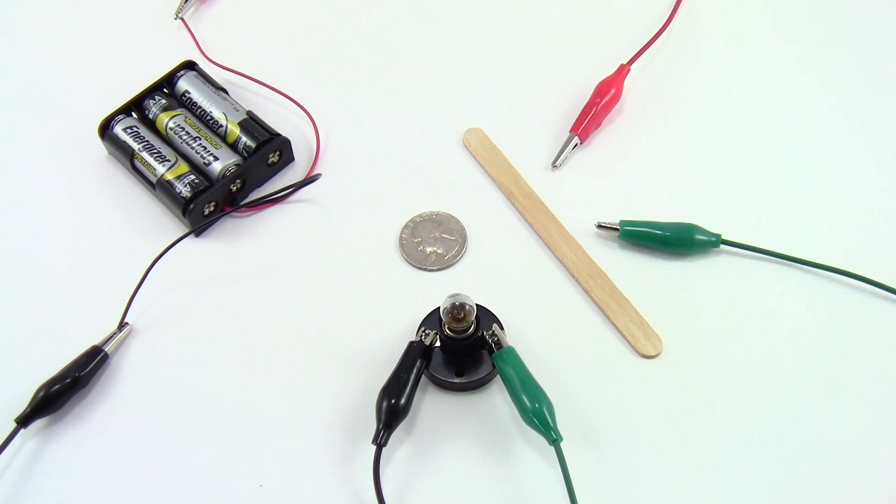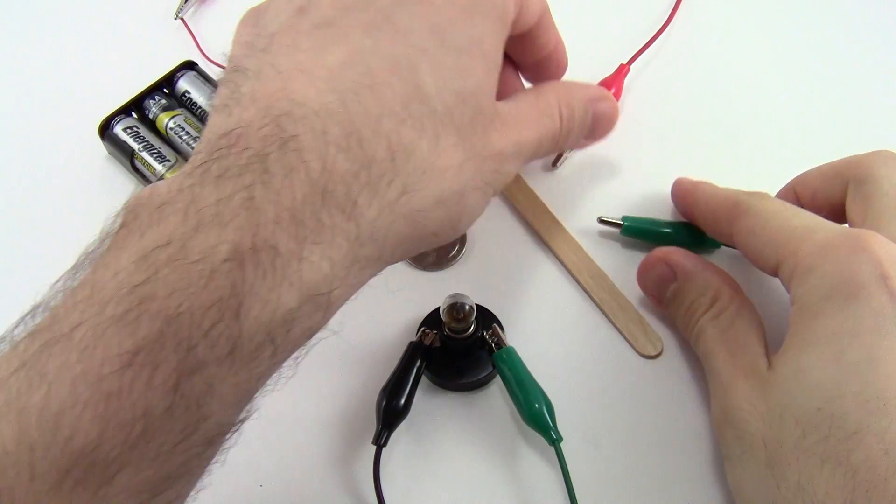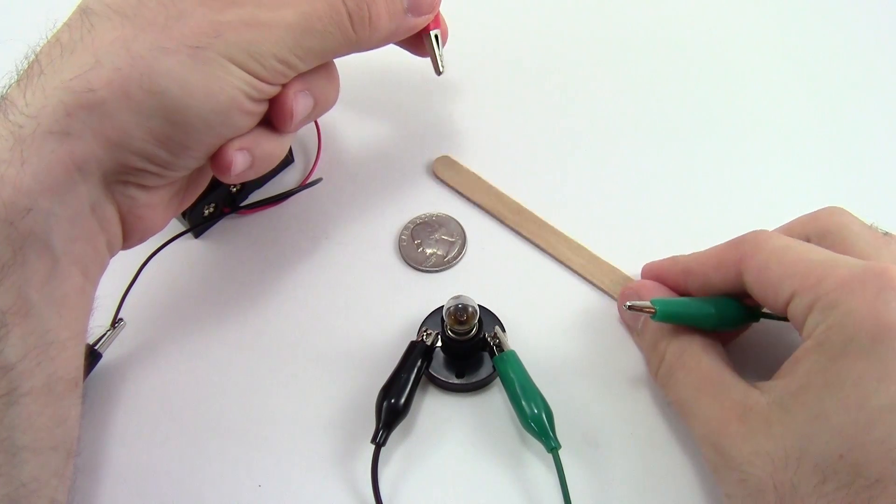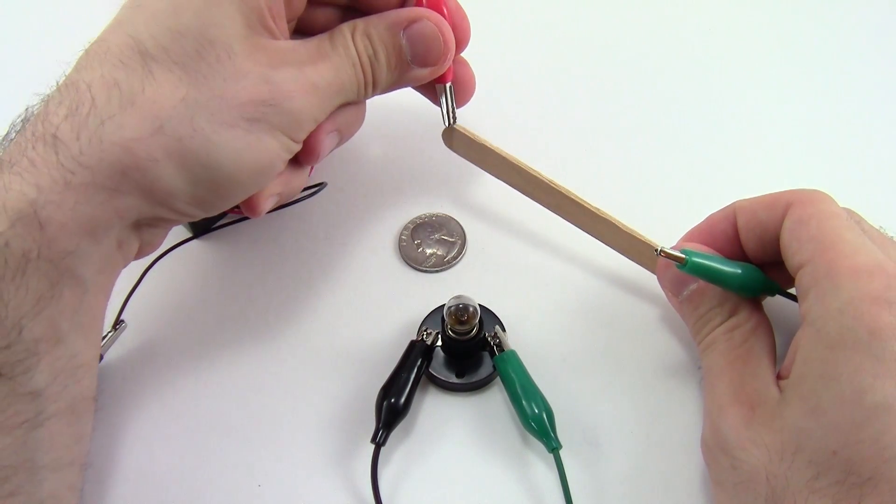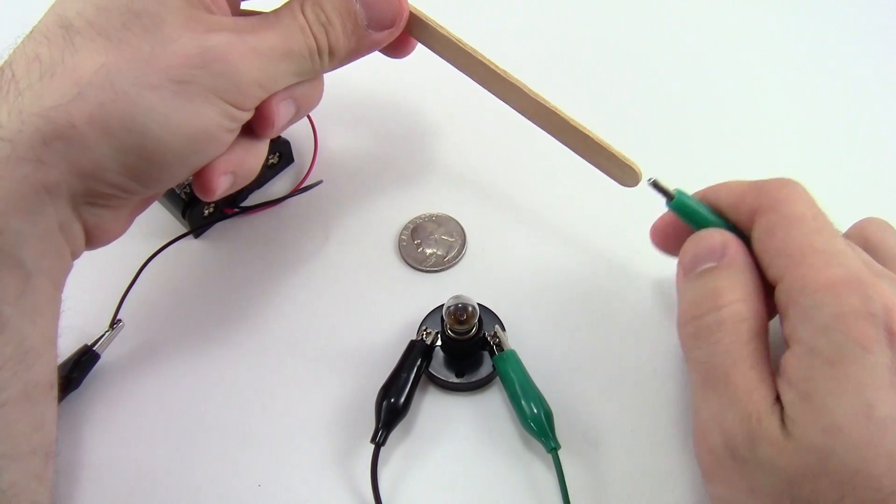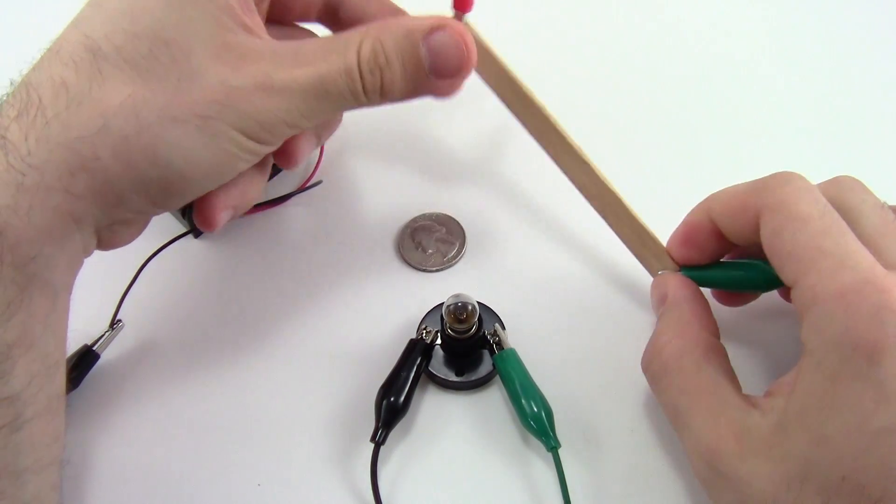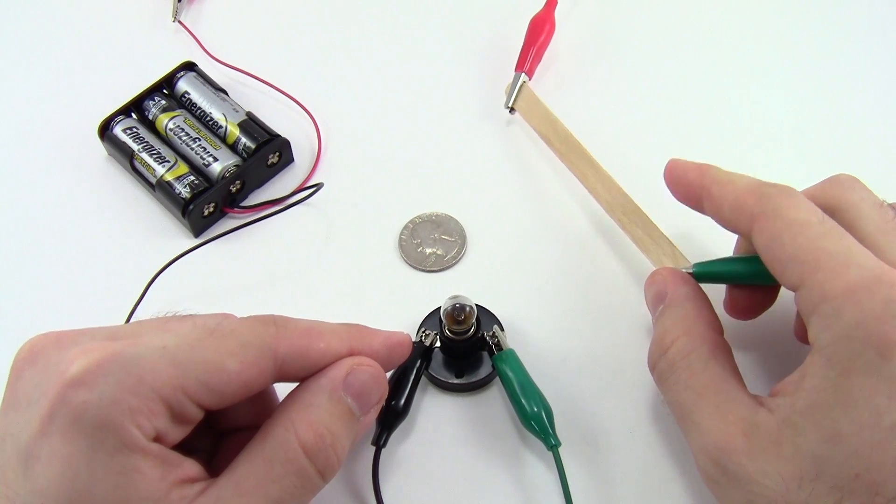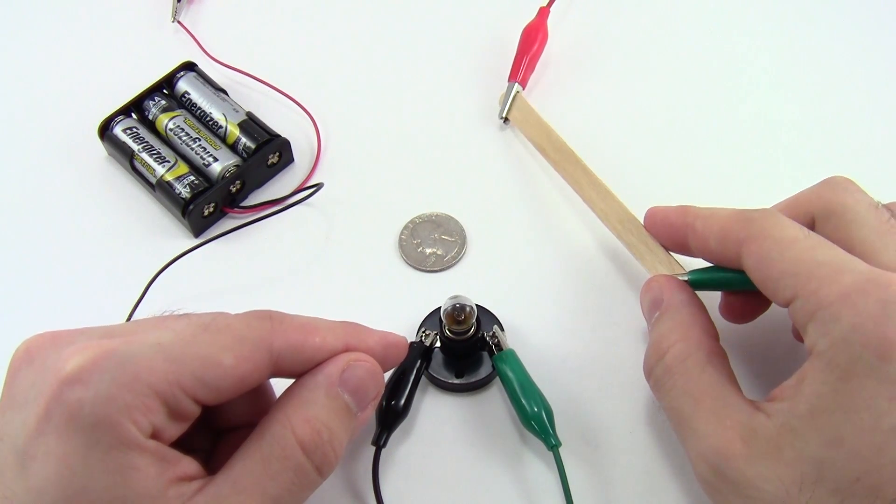Now to test if a material is a conductor or an insulator, all you have to do is connect it to the free ends of your red and green alligator clips. I'm going to start out by testing this popsicle stick. So I take my two alligator clips and pinch them onto the ends, and notice that the light bulb does not light up. That means that this popsicle stick is an insulator. It does not allow electricity to flow.